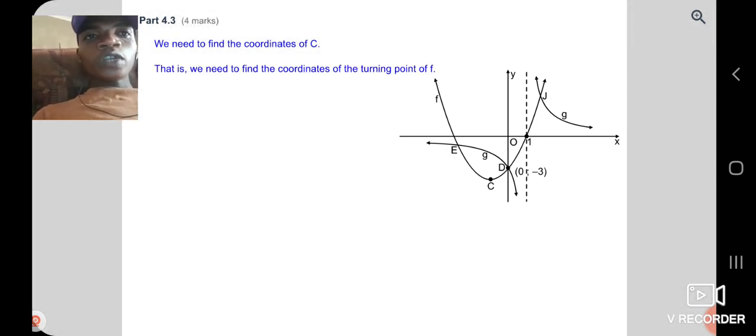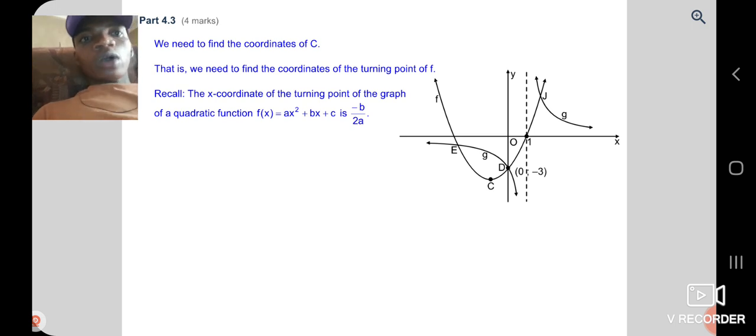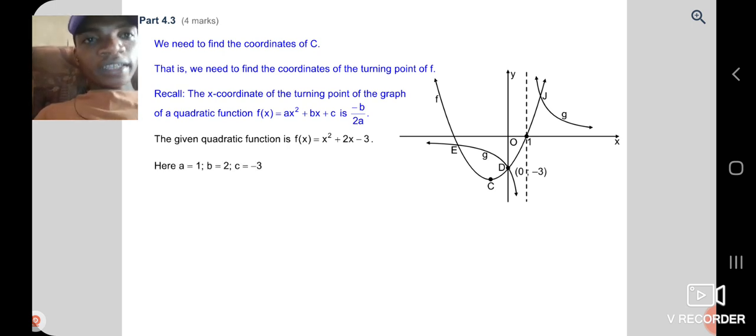Part 4.3. We need to find the coordinate of C. The coordinate of C is a turning point. So we have a question of a asymptote for parabola, x = -b/(2a). We take b and a to find that point.